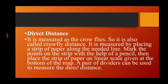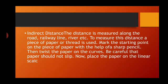Then place the strip on a linear scale given at the bottom of the map. A pair of dividers can also be used to measure the direct distance. In simple words, direct distance means a straight line — the same line in which a bird flies.